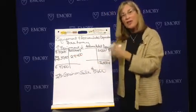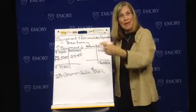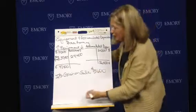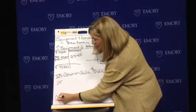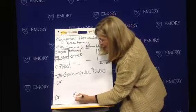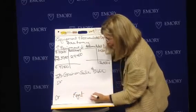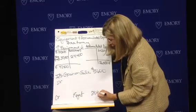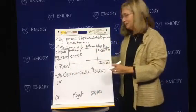The asset I sold went out the door and hopefully cash came in. If I was going to reconstruct those entries, I know I'm going to credit equipment for $24,400 because it made the equipment go down.